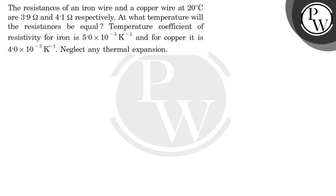In this question, we are given that the resistances of an iron wire and a copper wire at 20°C are 3.9 ohm and 4.1 ohm respectively. We need to find at what temperature the resistance will be equal. The temperature coefficient of resistivity for iron is 5×10⁻³ per kelvin and for copper it is 4.0×10⁻³ per kelvin. Neglect any thermal expansion.